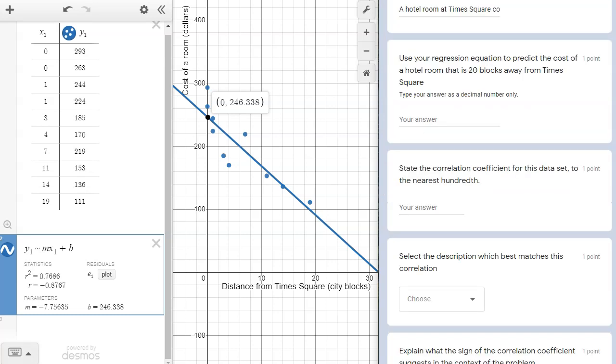In the next question, we're asked to predict the cost of a hotel room that is 20 blocks away from Times Square. Again, our axis labels serve as a good reminder here which value x or y is equal to 20. Since we are told that the hotel is 20 blocks away from Times Square, that must be our input x. So we use our equation and replace x with 20, then solve for y.